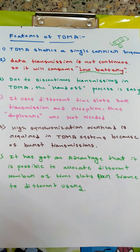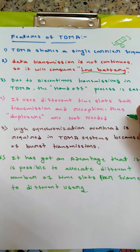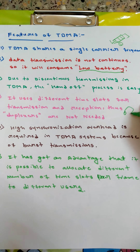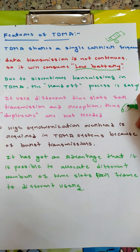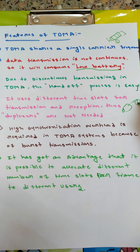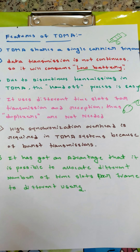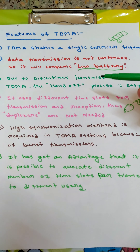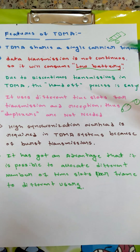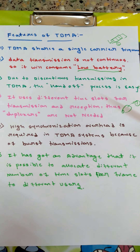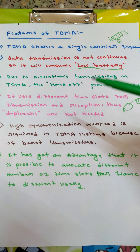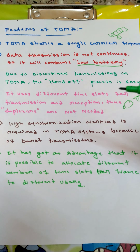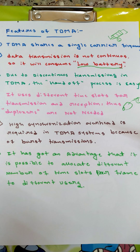The third point is that due to discontinuous transmission in TDMA, the handoff process is easy. Handoff is basically when a person moves from one base station to another base station and control is given to the newly entered base station. This handoff is easy because of the buffer and burst method.